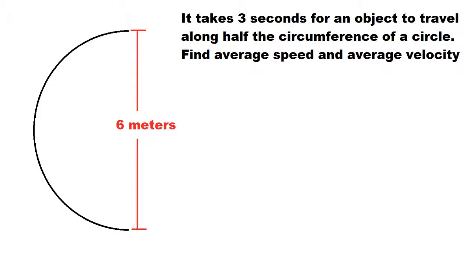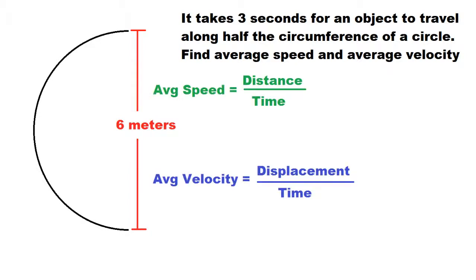So this problem is meant to show the difference between the average speed and average velocity of the object. To find average speed, you just take distance over time, whereas for average velocity, you take the displacement over time.